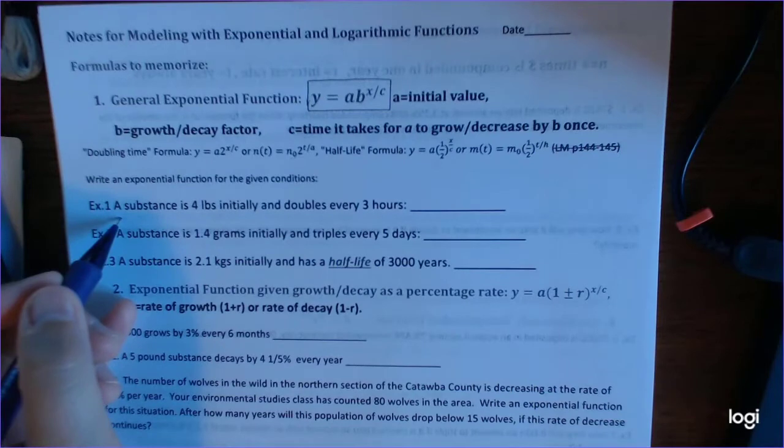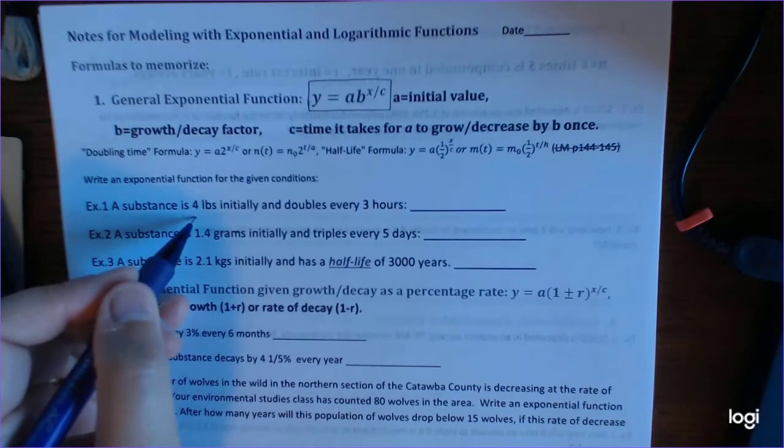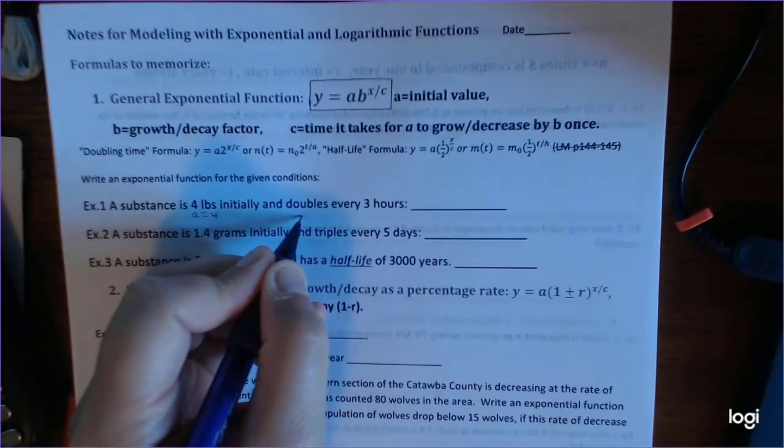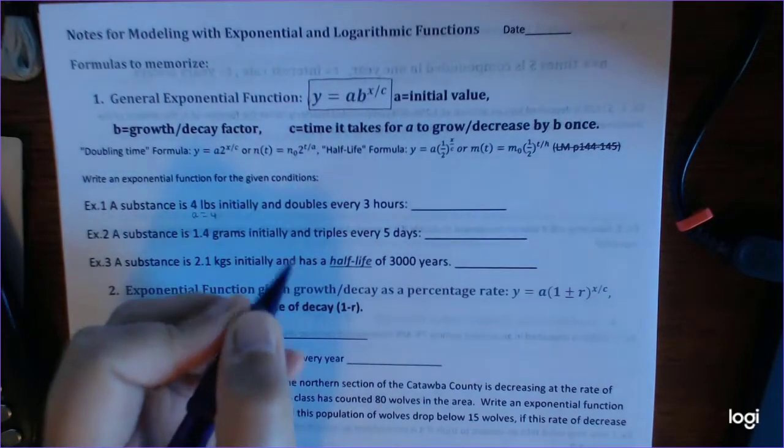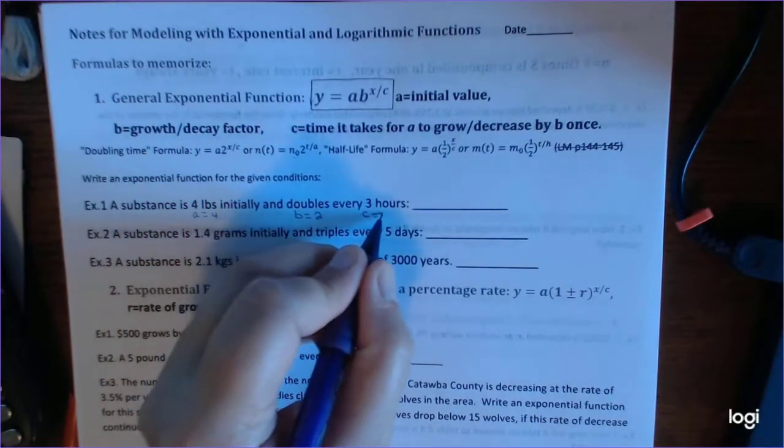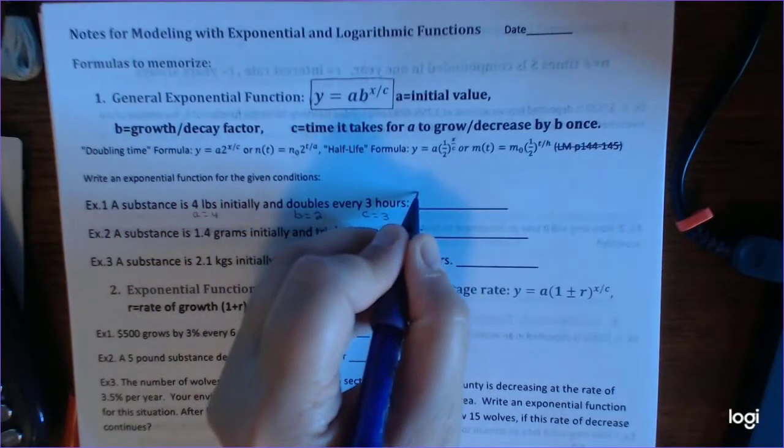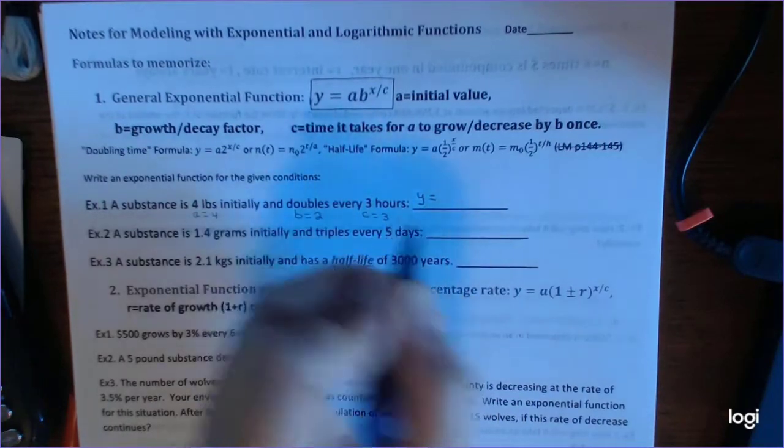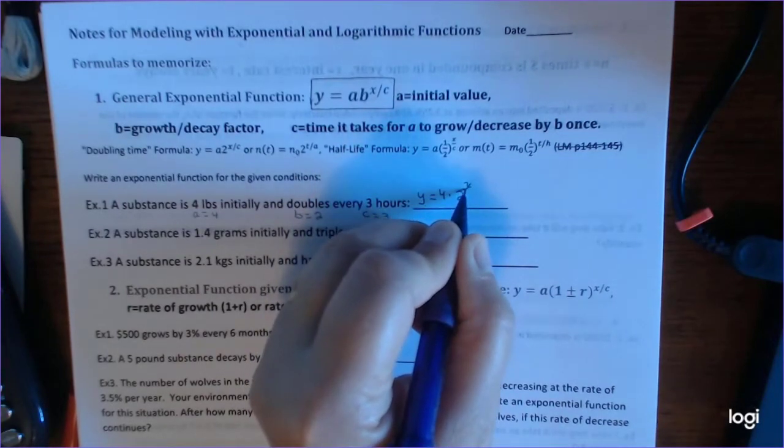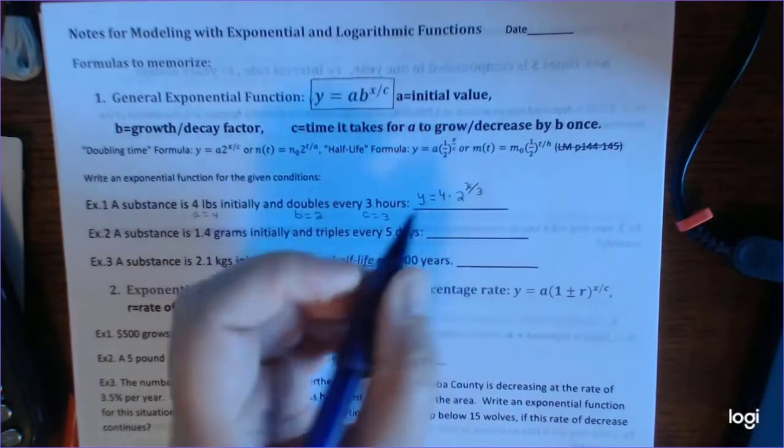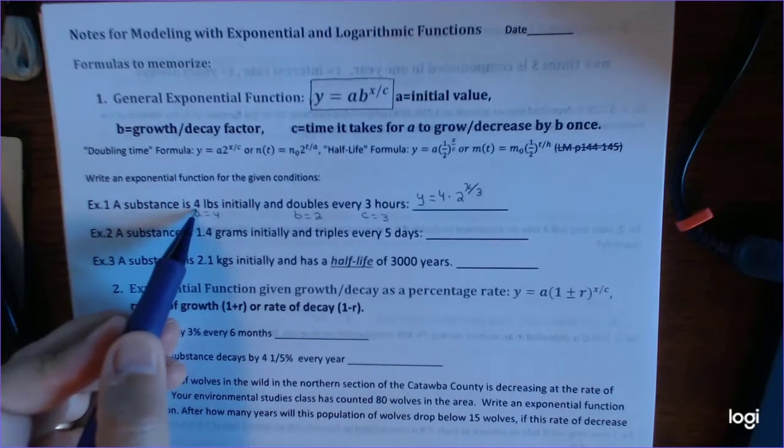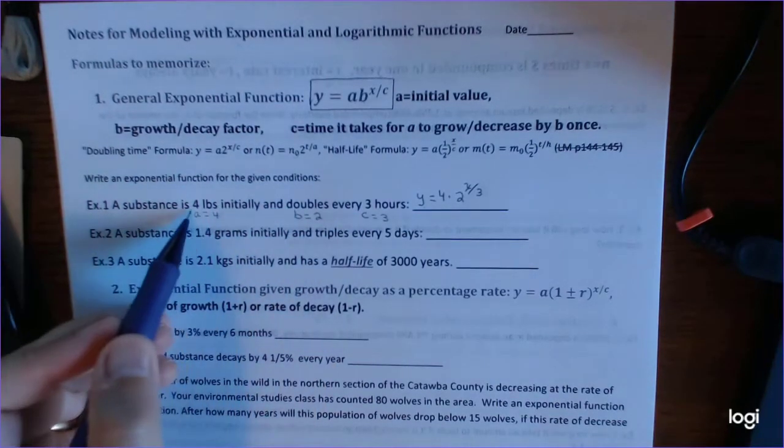First one says a substance is 4 pounds initially, so that would be your initial value. And it doubles. That means you're going to multiply by 2, but not until 3 hours have passed. So your growth factor is B equals 2, and your C is 3. So to write a function, Y, the output, equals the initial value 4 times 2 to the X over 3. And you can check it out. If you put 3 hours, you can do it in your head. If you've got 4 pounds initially, how much will you have after 3 hours?